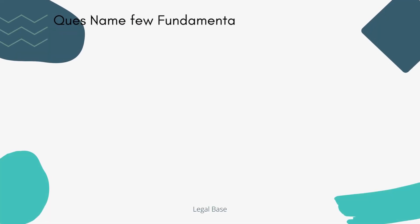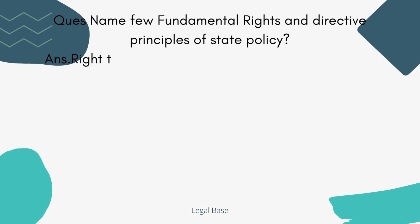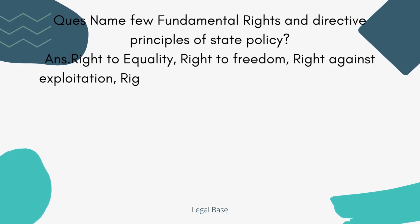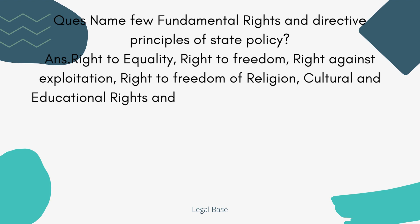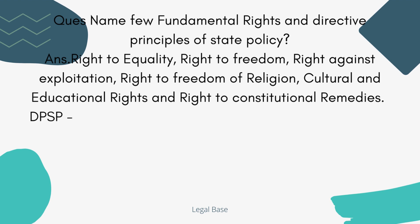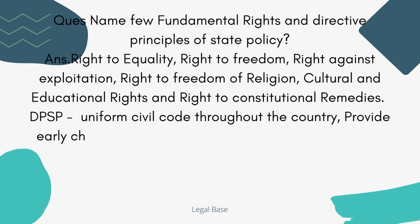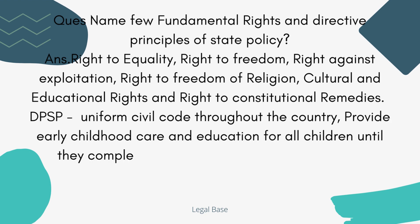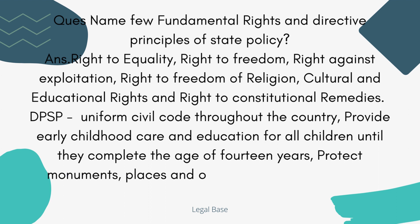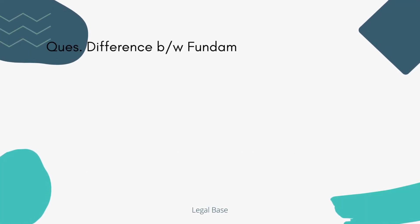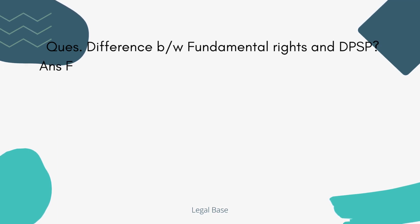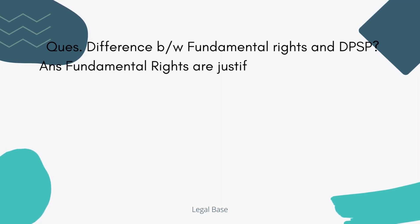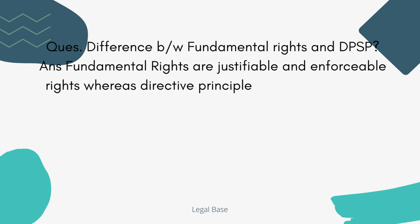You should remember a few Fundamental Rights and Directive Principles of State Policy (DPSP) — their names can be asked. For example, the right to equality is a Fundamental Right, while others are Directive Principles. You should read about all the names of Fundamental Rights and DPSP. A key question can be the difference between Fundamental Rights and DPSP — Fundamental Rights are enforceable and justiciable, whereas DPSP are not.